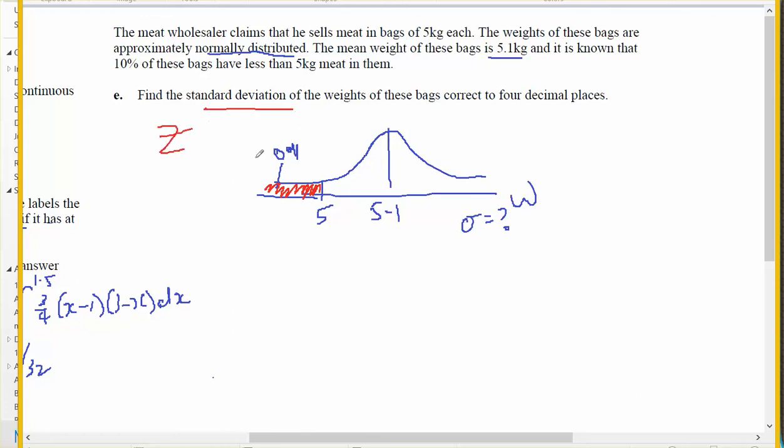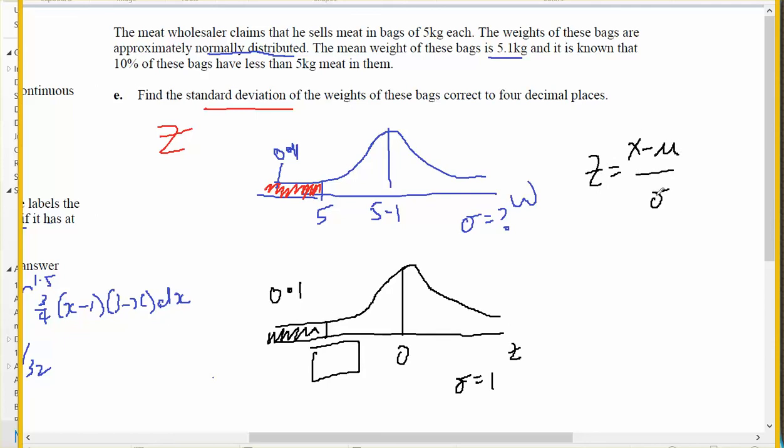I need to use Z to be able to find the standard deviation. So down here I'm going to draw my Z. Z will also be normally distributed. Z has a mean of 0 and a standard deviation of 1. And if I could find the Z value that gives me a 0.1 left tail probability, then I can use Z equals X minus the mean over the standard deviation.